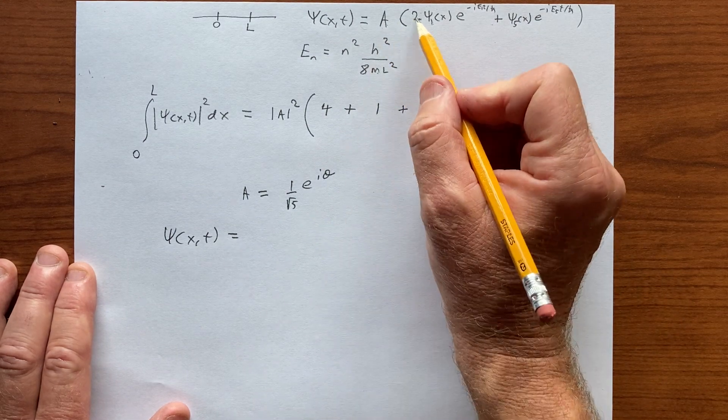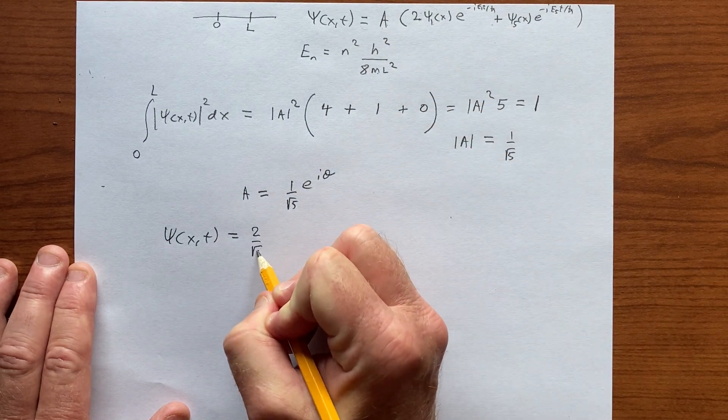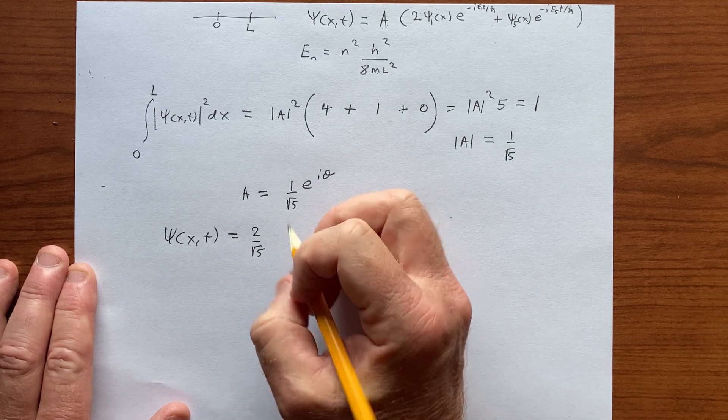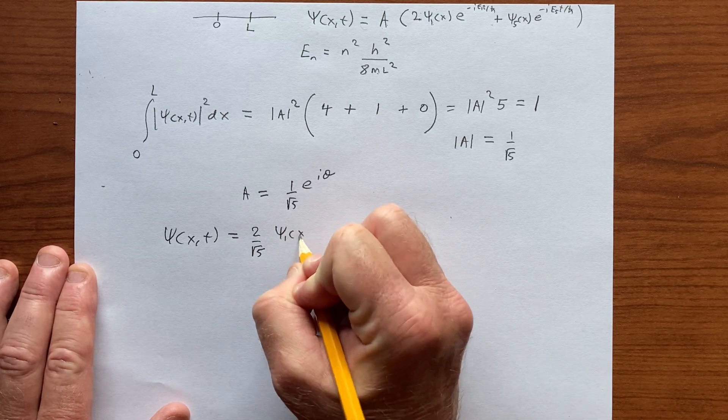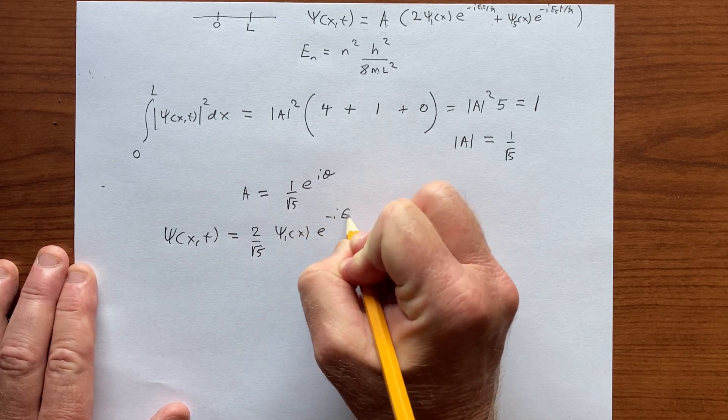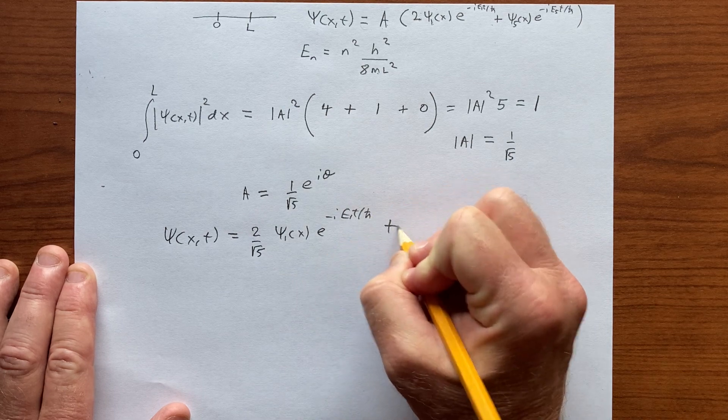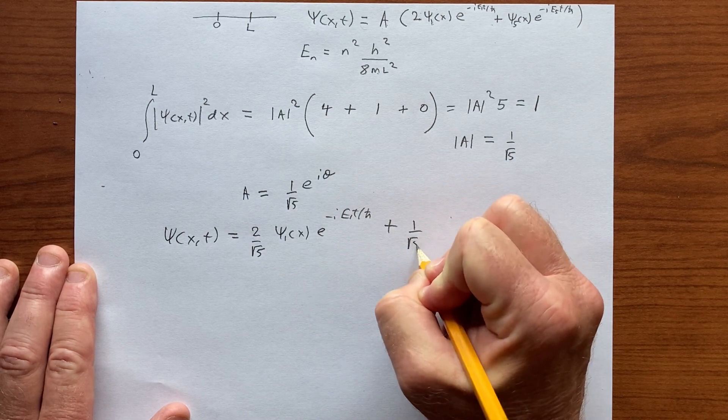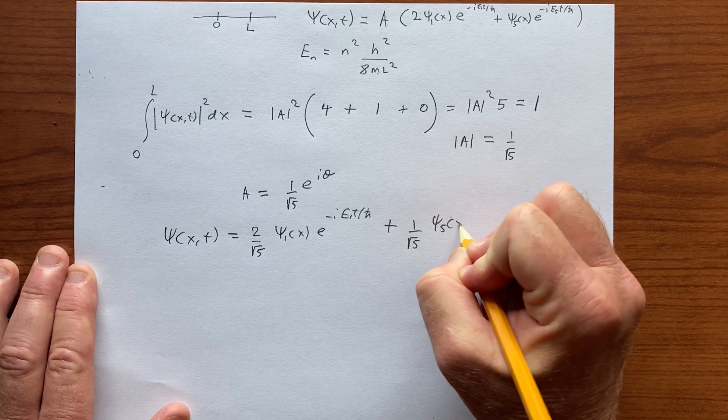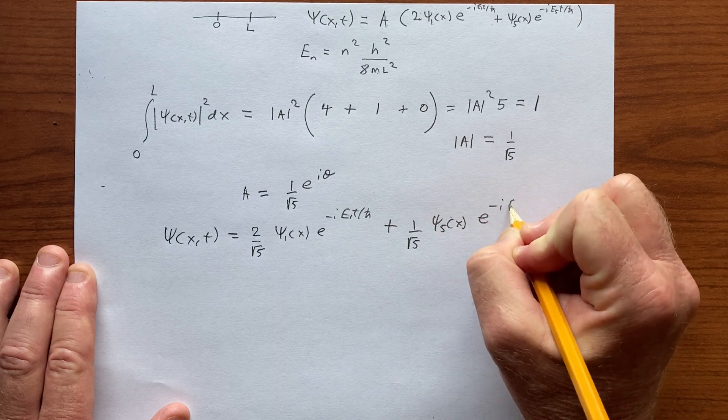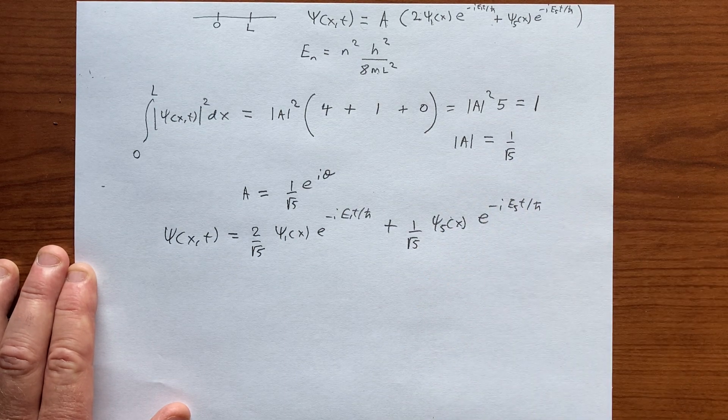So let's just leave the theta to 0, and then we can say psi of x and t is equal to... We have an A here, but then we have a 2 here, so it's 2 over the square root of 5, psi 1 of x e to the minus i E1 t over h-bar, plus 1 over root 5, psi 5 of x e to the minus i E5 t over h-bar.